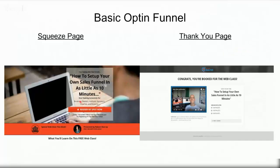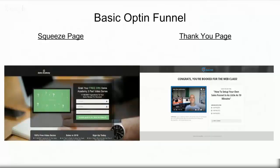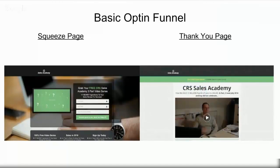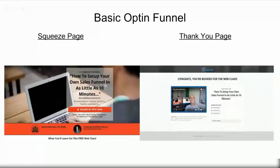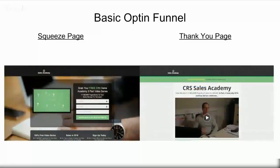So there is a very basic opt-in funnel - taking someone's information because it's something they want to look at. It could be a PDF, a video series, or any information you can offer in relation to your product or service. It's got to be engaging enough that they enter their details, and then a thank you page explaining what's going to happen next. Here's another opt-in page from our CRS Sales Academy - 'Grab your free CRS Sales Academy three-part video series: The 17 Secret Ingredients to Your Sales Recipe for Success.' Notice how the squeeze page and thank you page are congruent - the colorings and styling are all the same, so someone feels they're definitely in the right place.